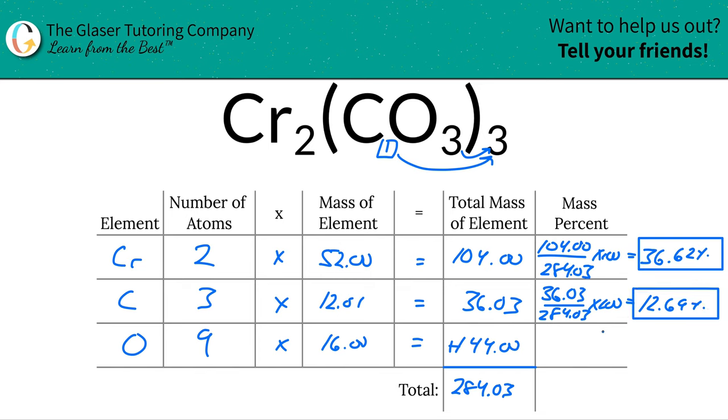And then last but not least, for oxygen, it's 144 over 284.03. Multiply that by 100, and you're simply going to find a percent here of roughly about 50.70.